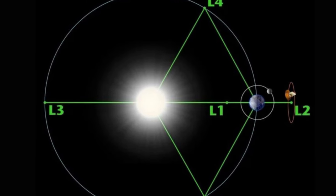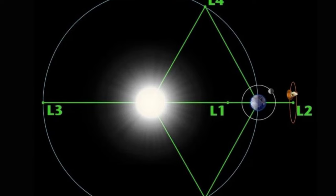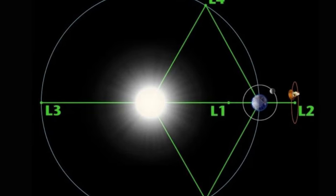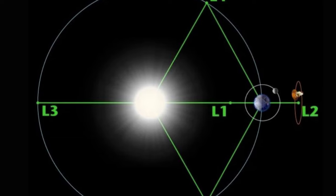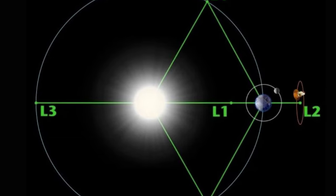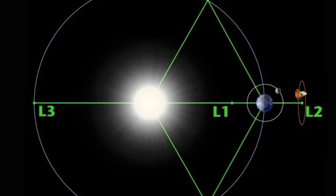Trojans are well known in the solar system. Jupiter, naturally, has the most, with well over 11,000 documented, but we've found them hanging out with other planets too. Neptune has 32, Mars has 9, and Uranus has 1.